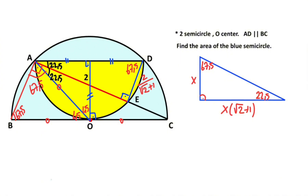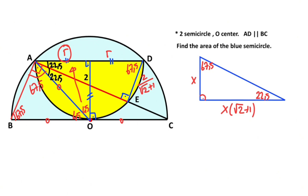I want to represent the radius of the yellow semicircle with r. So these segments are also r units. Focusing on the isosceles right triangle: if there is an r-unit side opposite 45 degrees, the side opposite 90 degrees must equal r√2. So the hypotenuse is also r√2.